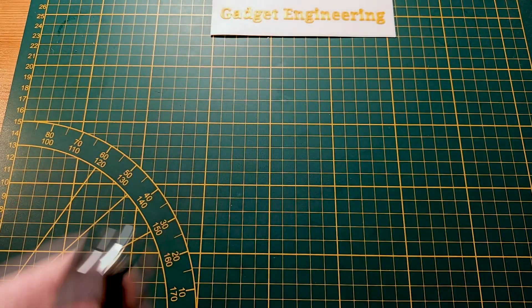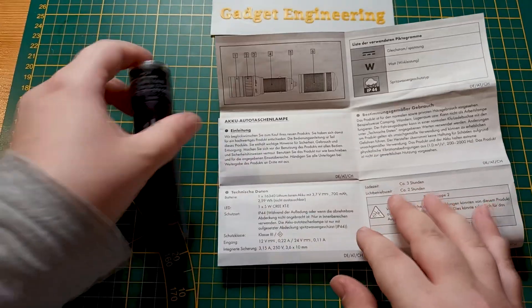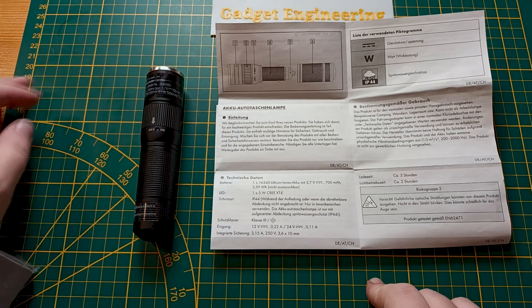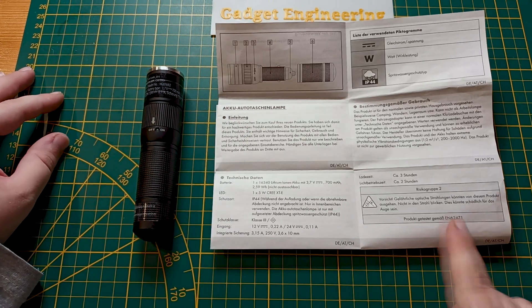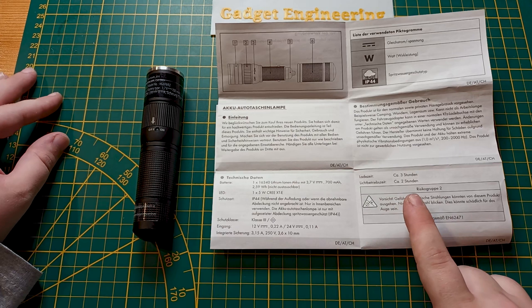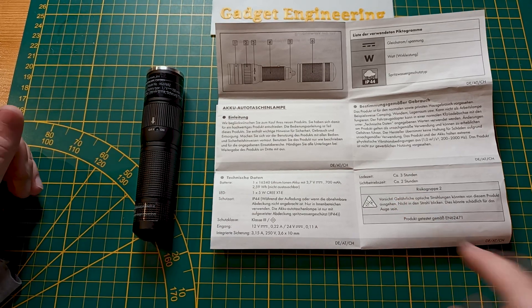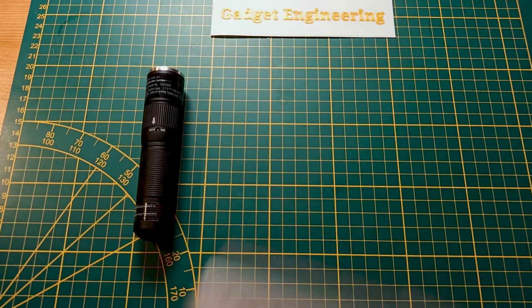And it is specced, as you can see here, with a 5 watt Cree XTE LED, IP44, two hours of battery capability on its only on setting. So a fairly decent lamp.